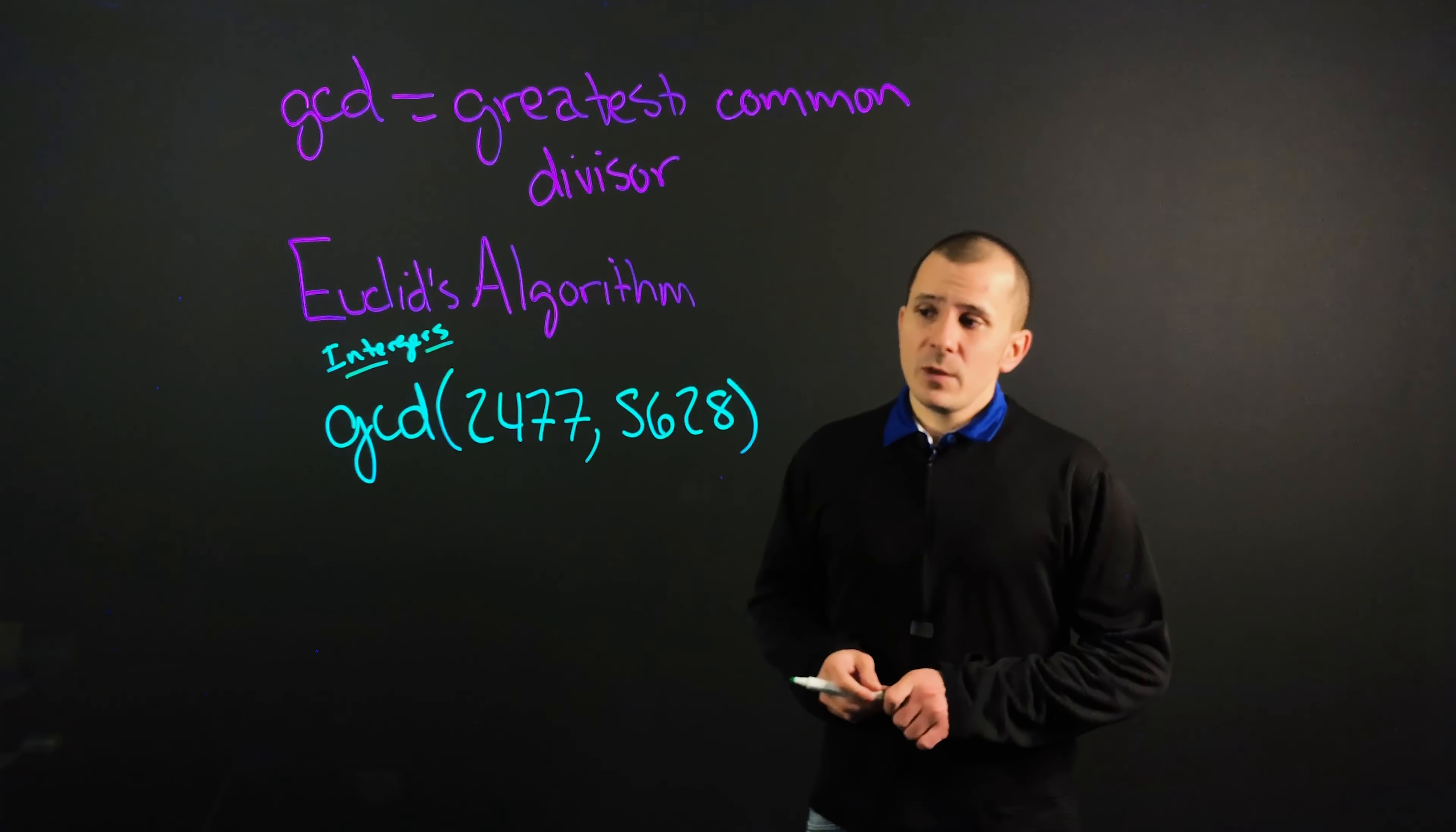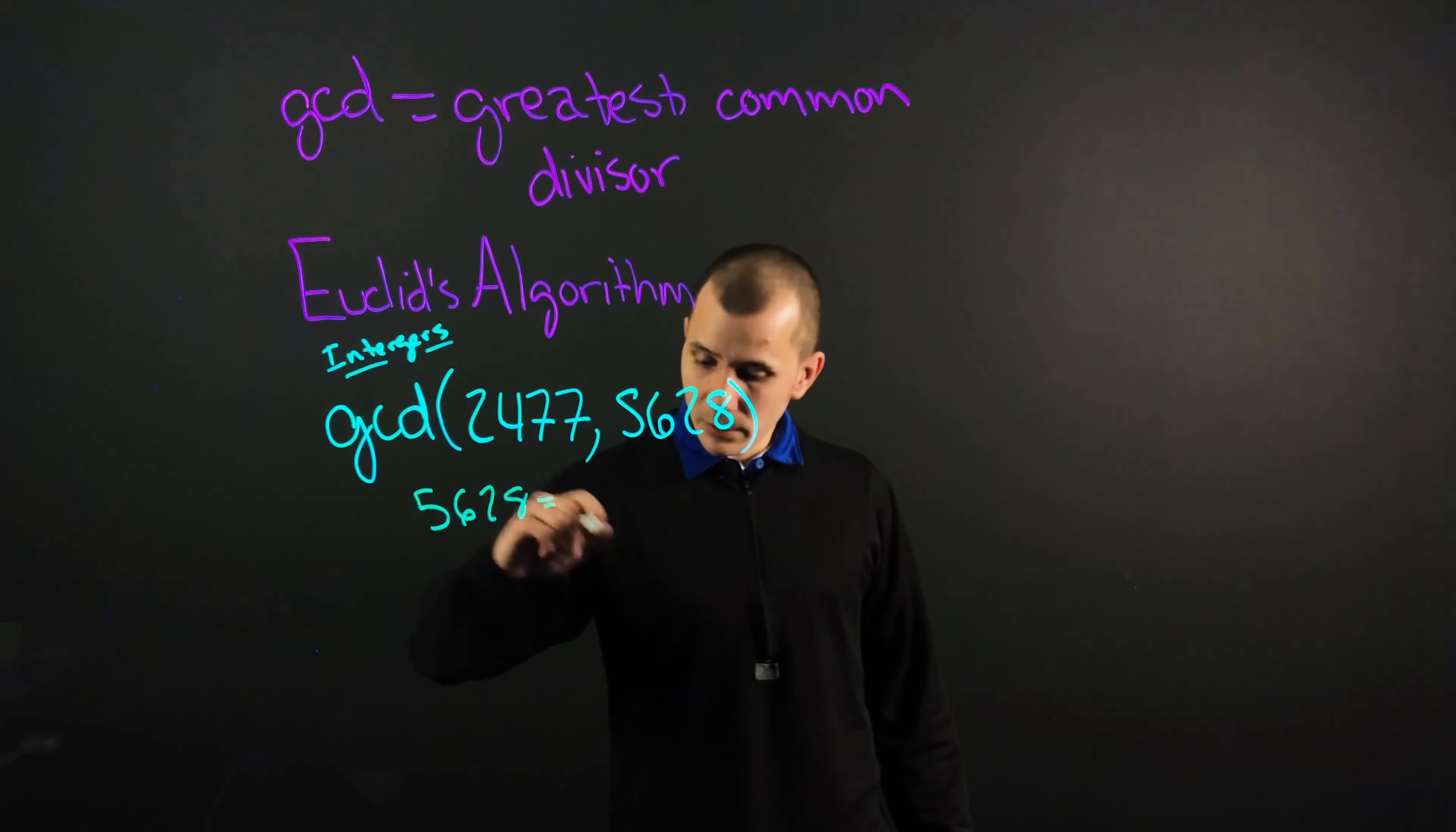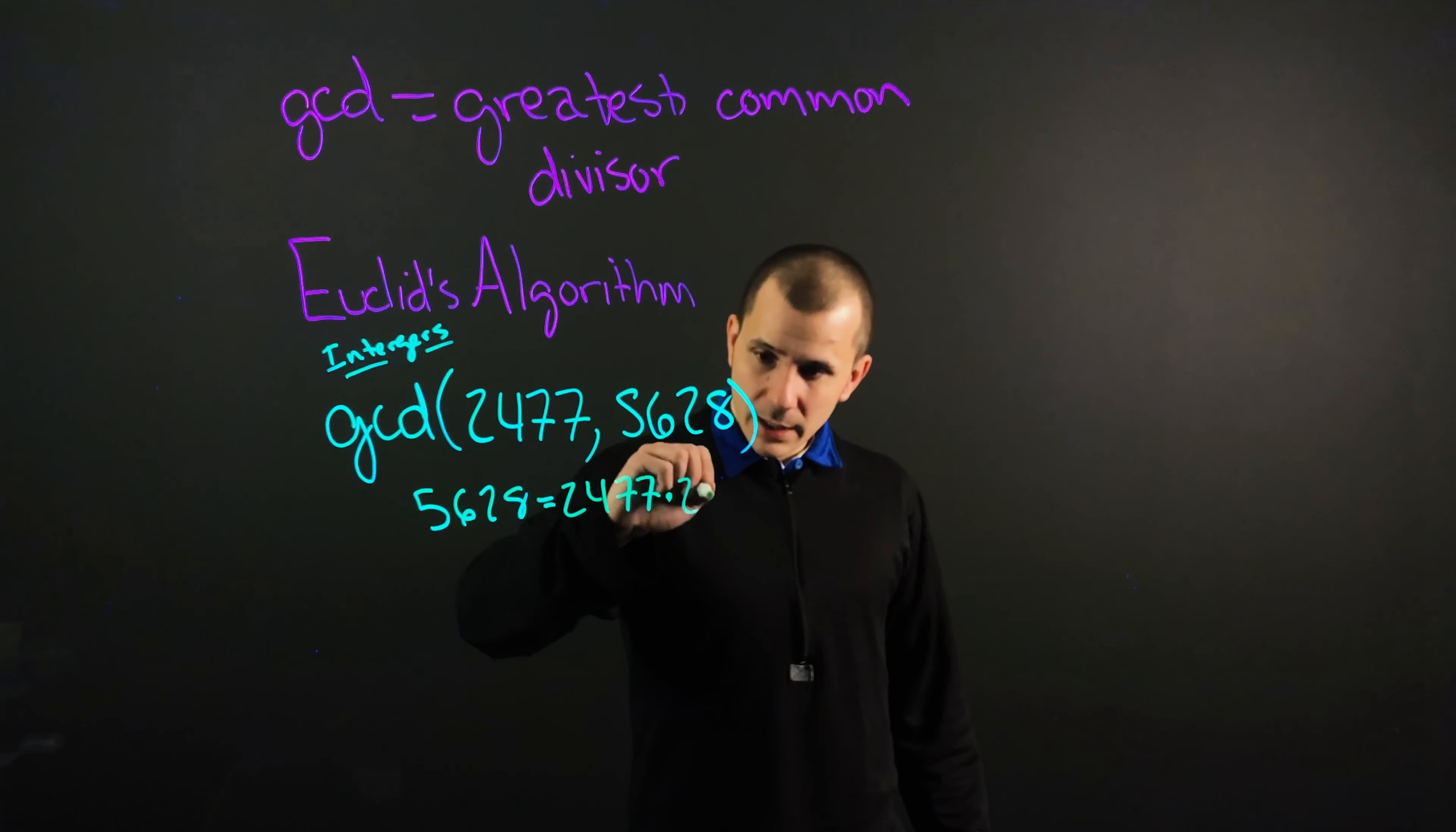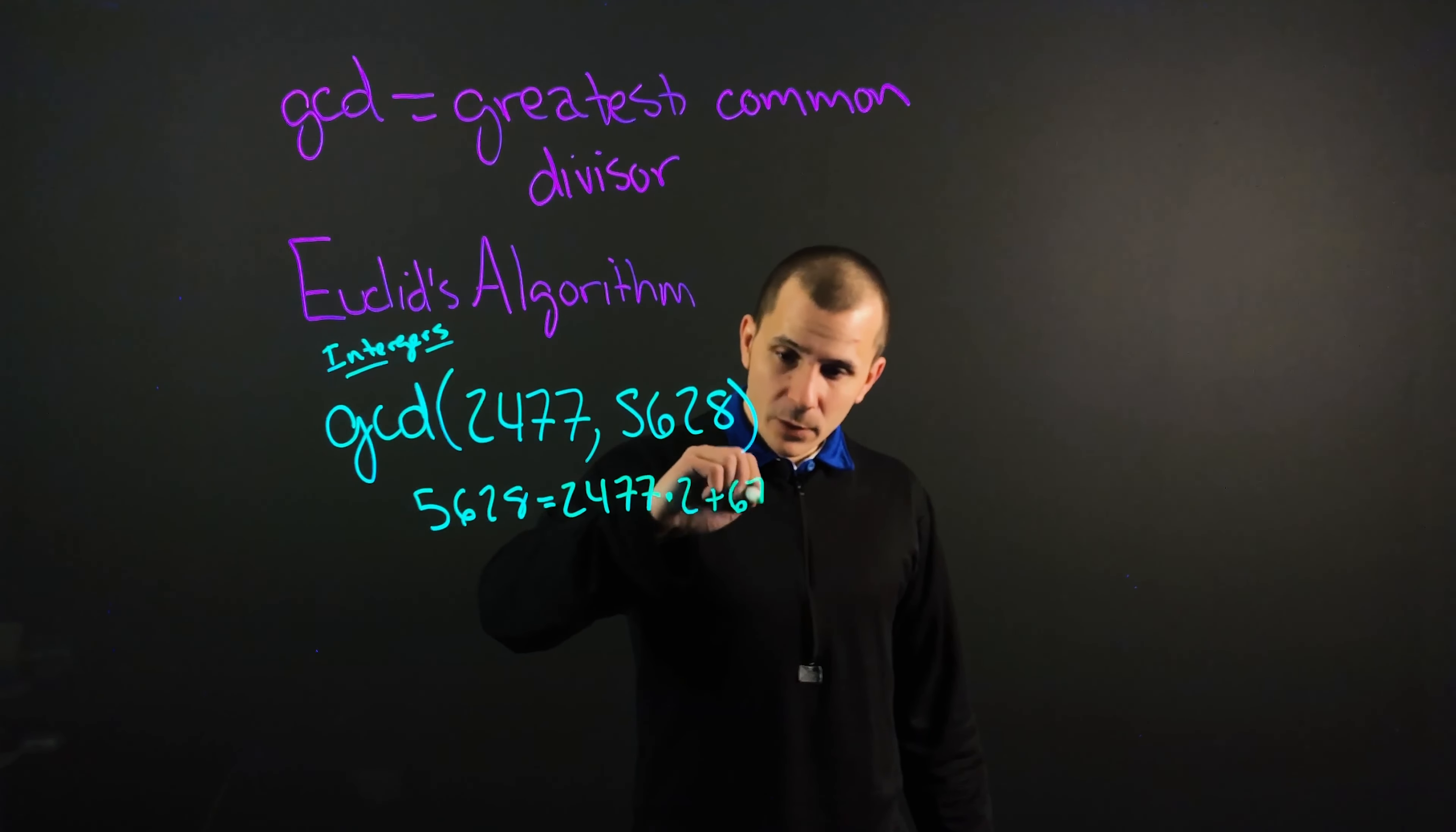So if we have two numbers inside our bracket here, what we can do is write that the GCD(2477, 5628) becomes 5628 equals 2477 times by 2, and what we have remaining from that—so 5628 minus 2477 times 2—equals 674 as our remainder.